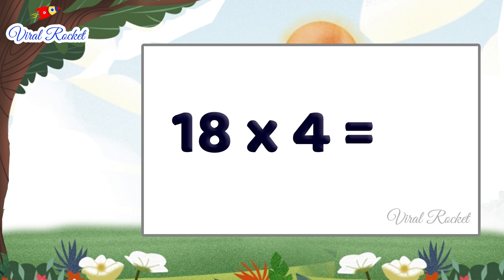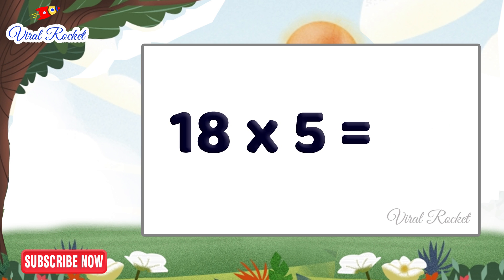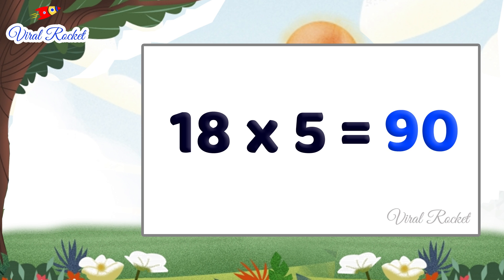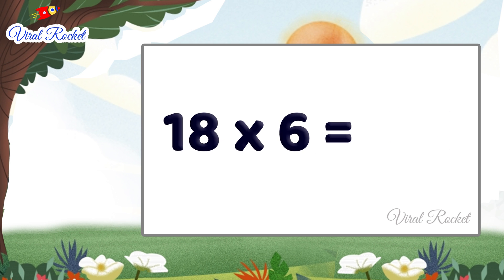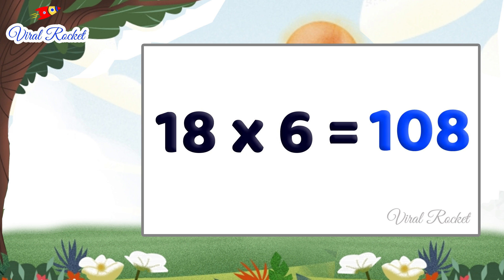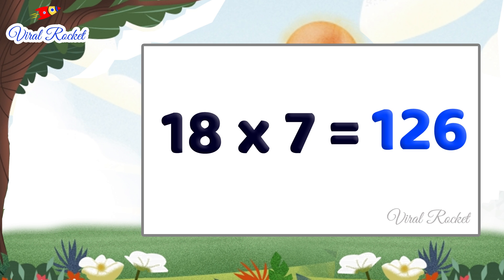18 4s are 72. 18 5s are 90. 18 6s are 108. 18 7s are 126.